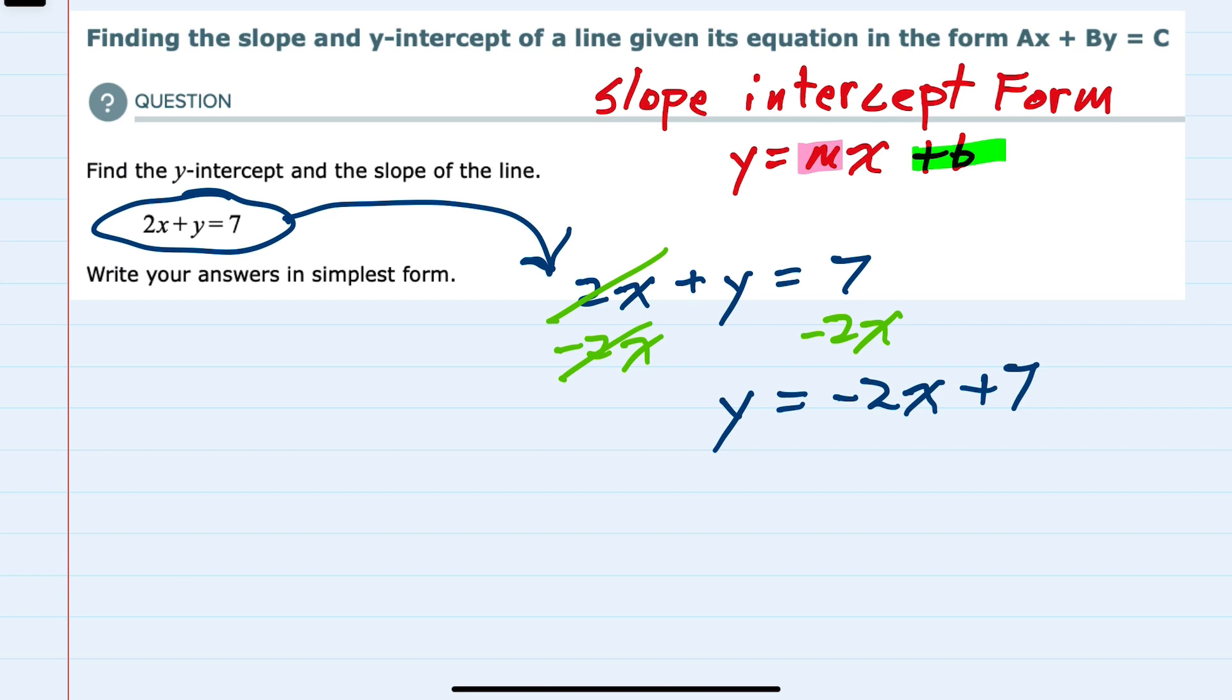Since there is no coefficient in front of the y, I now have slope-intercept form where my slope m is negative 2, and the y-intercept is the value where x is 0 and the y value is b, which is here 7.